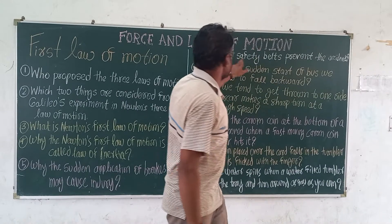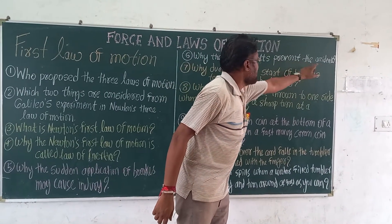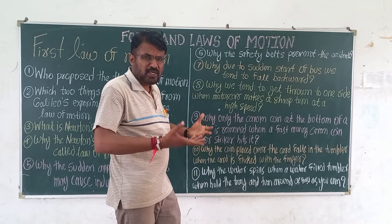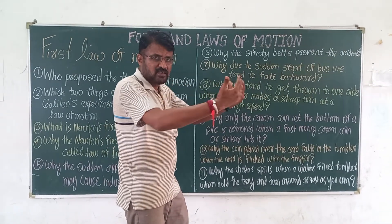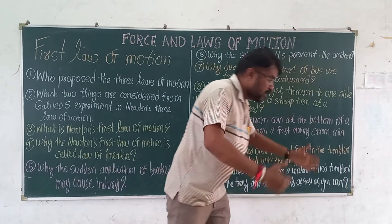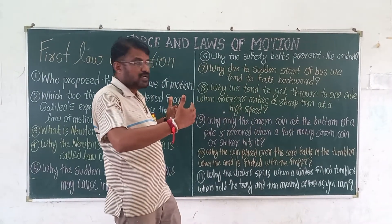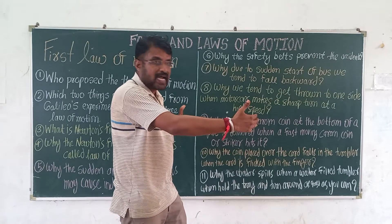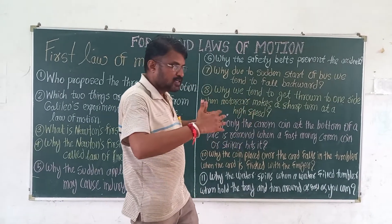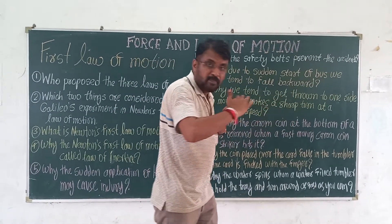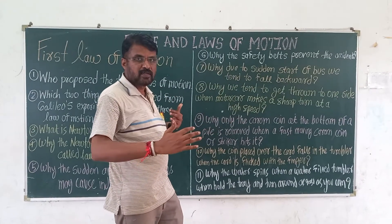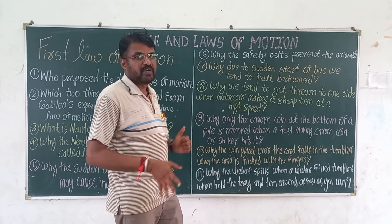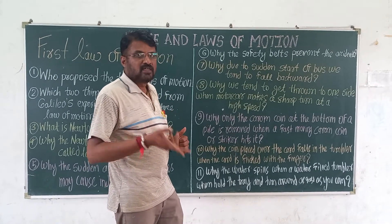Why do safety belts prevent accidents? When brakes are applied, we suddenly move forward fast. But due to the safety belt, whatever forward movement we have becomes slower. The safety belt reduces that forward motion, preventing head injury and other injuries caused by that forward movement.